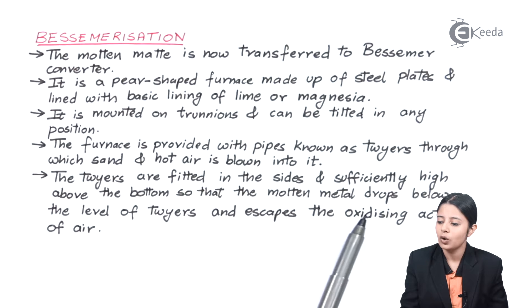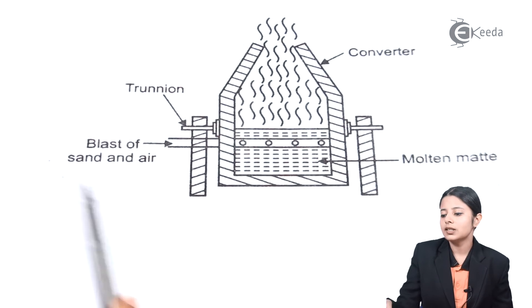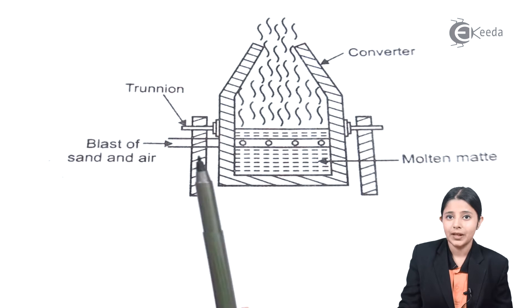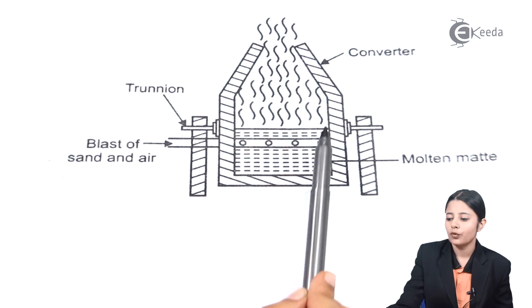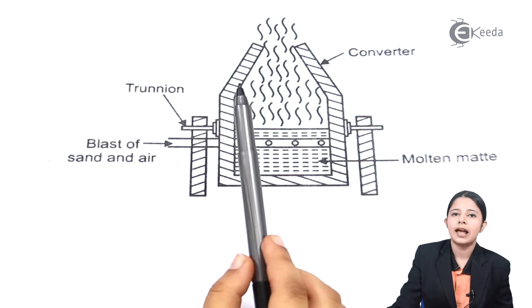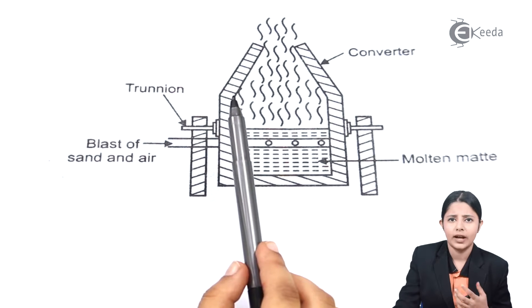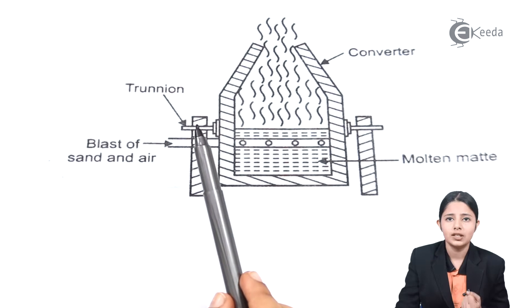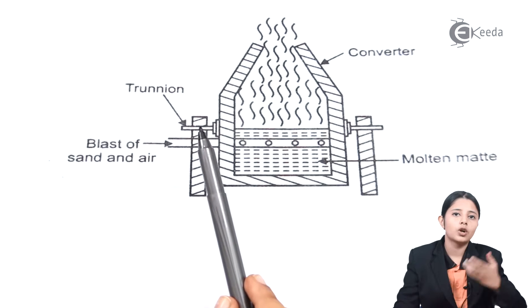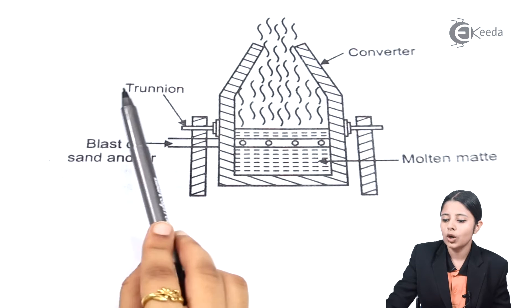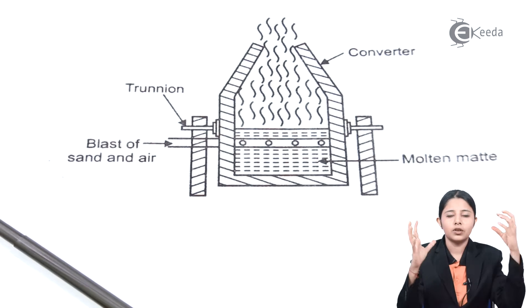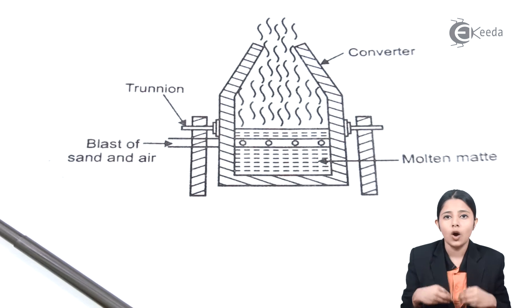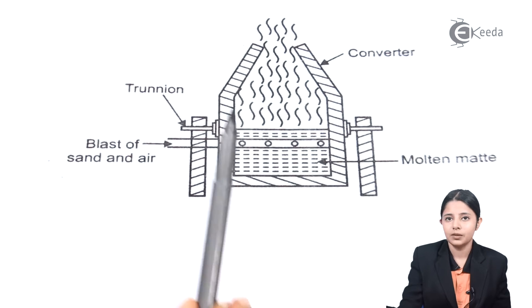The tuyeres are fitted in the side and sufficiently high above the bottom so that the molten metal drops below the level of tuyeres and escapes the oxidizing action of air. So this is the diagram of my Bessemer converter. As you can see it is pear shaped. It is made up of steel and inside on the interior walls of it there are linings of lime and magnesia. This lime and magnesia lining act as refractories. That is they will maintain the temperature inside the Bessemer converter as it is and will not allow a lot of temperature to go out. It is on a trunnion. What is a trunnion? It is a sort of a fitting through which the entire Bessemer converter is fitted.